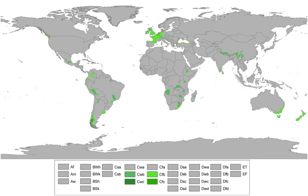The subtropical highland variety of the oceanic climate exists in elevated portions of the world that are within either the tropics or subtropics, though it is typically found in mountainous locations in some tropical countries. Despite the latitude, the higher altitudes of these regions mean that the climate tends to share characteristics with oceanic climates, though it also tends to experience noticeably drier weather during the lower sun period. In locations outside the tropics, other than the drying trend in the winter, subtropical highland climates tend to be essentially identical to an oceanic climate, with mild summers and noticeably cooler winters, plus in some instances some snowfall.